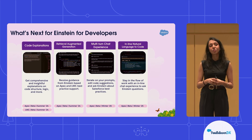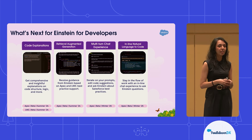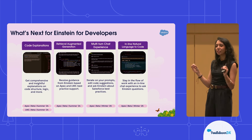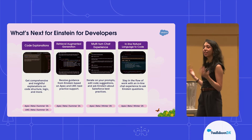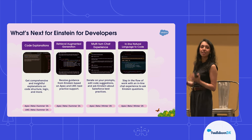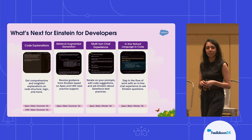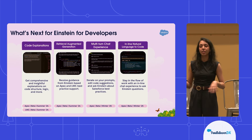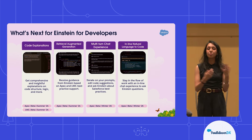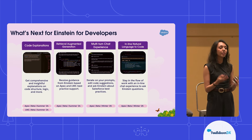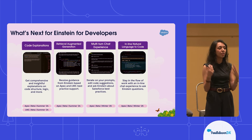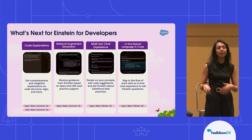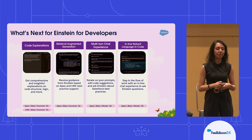Next up, we have retrieval augmented generation. As you might have realized, one of the really important parts about working with AI is making sure that it has all of the right context to give you the responses that you're expecting. We're going to be enhancing our context building techniques beyond what I described today with the help of retrieval augmented generation, so we'll have a much better understanding of all of that metadata schema within your org and your local code base files.